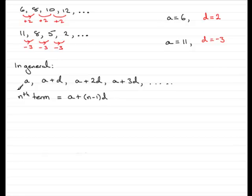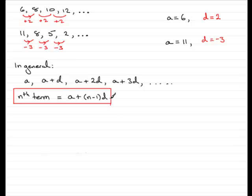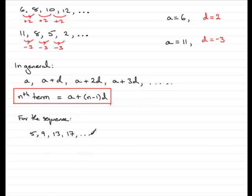This is a formula that you should try and learn. The nth term is equal to a plus (n minus 1)d. So if I had a sequence — let's say we had 5, 9, 13, 17, and so on — you can see that this is an arithmetic progression because it goes up all the time by 4.